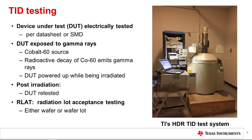After irradiation, the DUT is retested to see if it's still functional or if any critical parameters have shifted. RLAT stands for radiation lot acceptance testing, and it can be done either on a wafer or a wafer lot. The picture on the right is of Texas Instruments' TID test system.